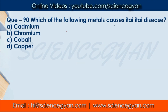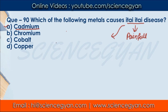Question number 90: Which of the following metals causes itai-itai disease? Note that 'itai itai' is a Japanese word meaning 'painful.' The correct answer is A — cadmium. In this disease, the bones become soft, kidney failure begins, and there is pain in the joints. So the correct answer is A — cadmium.